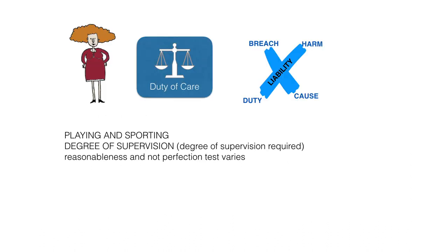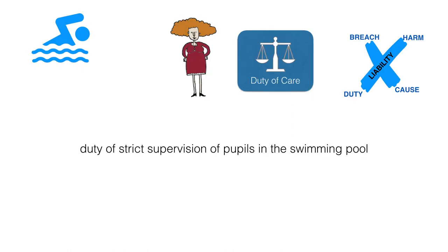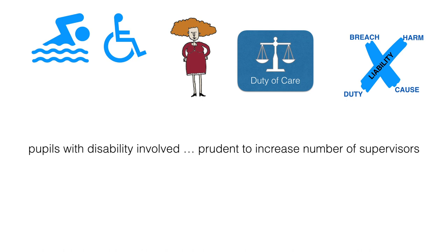Teachers and school authorities will not be held liable for every accident that may occur in a school. The court accepts that some accidents happen despite the implementation of control and supervision by teachers. However, teachers have a higher degree of care when pupils are involved in a sport and the risk of injury is higher. Thus, teachers have a duty of strict supervision of pupils in the swimming pool. When pupils with disabilities are involved, the degree of supervision required may be greater than what is normally applied.